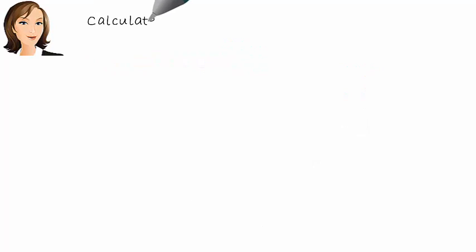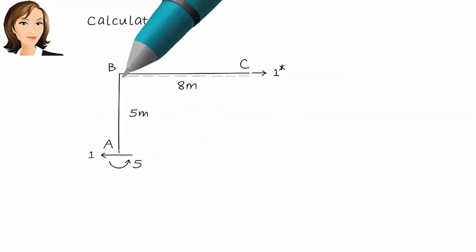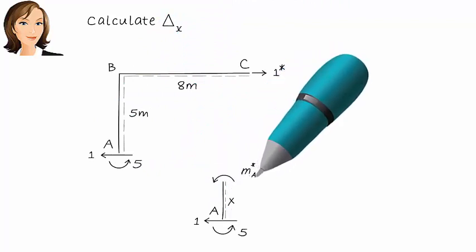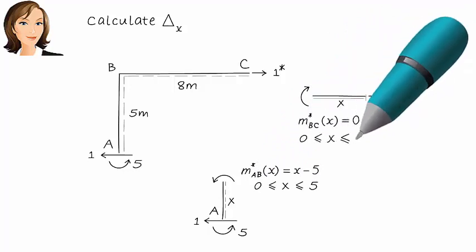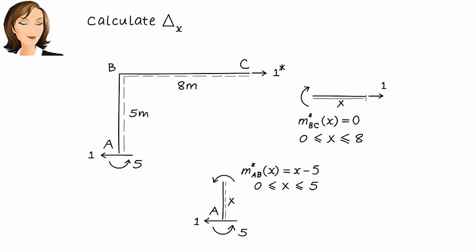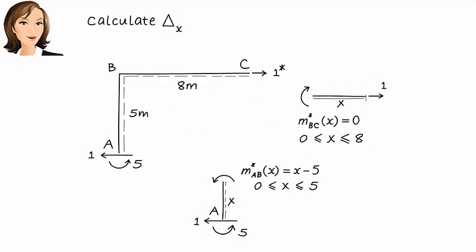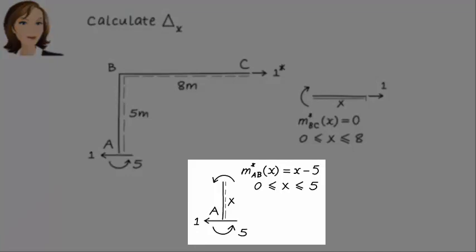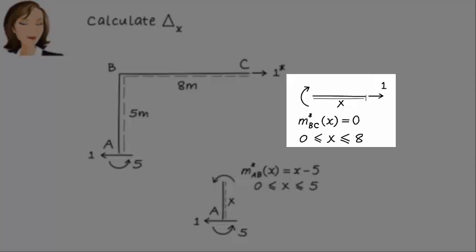Okay, now we need to calculate M star. Since we want to determine delta x, the virtual unit load is placed in the x direction at C. Again, we need to write the moment equations for the frame members. For member AB, we get x minus 5. For member BC, we get 0. The member does not carry any bending moment. It just carries an axial load.